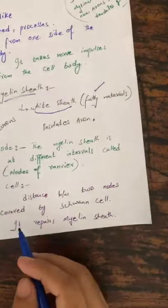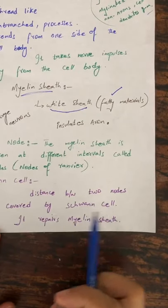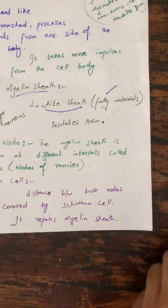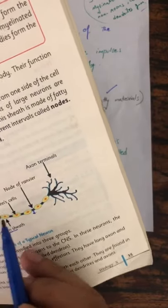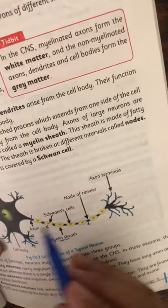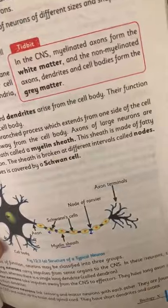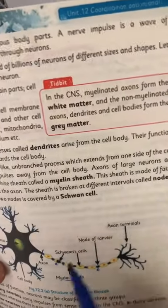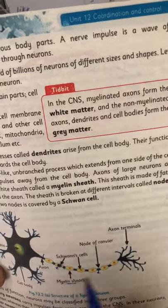The last structure to discuss is the Schwann cell. The distance between two nodes is covered by the Schwann cell. So between two nodes, there is a Schwann cell covering that distance. If you remove the myelin sheet or fatty sheet, here you have a cell called the Schwann cell. The function of the Schwann cell is to repair the myelin sheath.